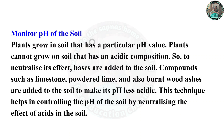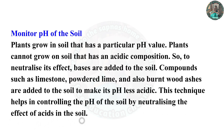Monitor pH of the soil: Plants grow in soil that has a particular pH value. Plants cannot grow in soil that has an acidic composition. To neutralize the effect, bases are added to the soil. Compounds such as limestone, powdered lime, and burnt wood ashes are added to the soil to make its pH less acidic, helping control the soil pH by neutralizing the effect of acidic soil.